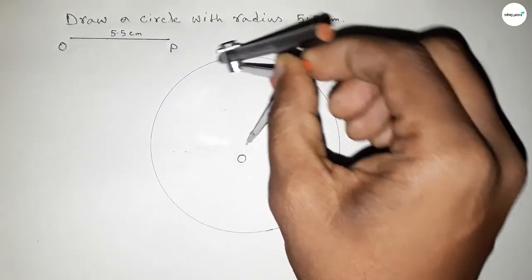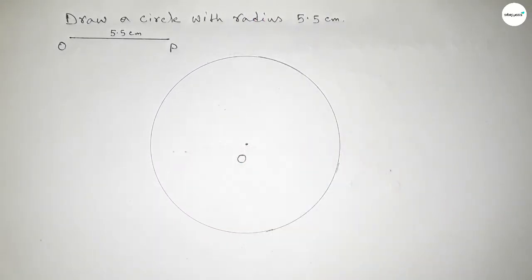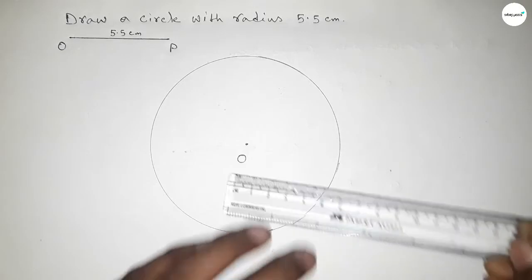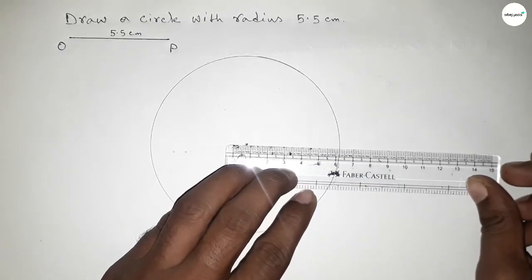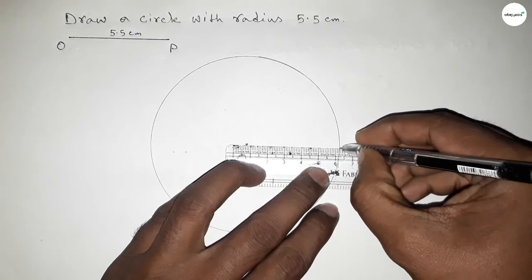This represents a circle with radius 5.5 centimeter. Now joining the center O up to perimeter to get the radius of this circle.